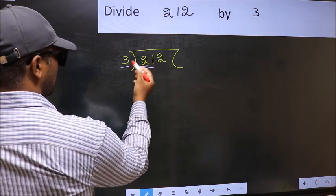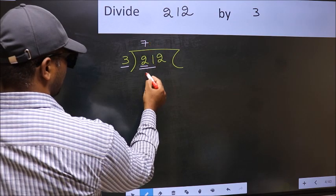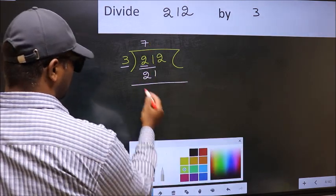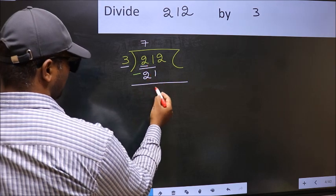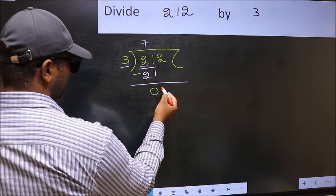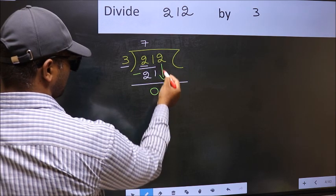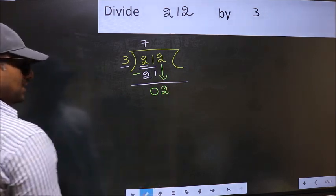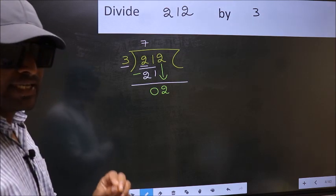When do we get 21 in the 3 table? 3 times 7 is 21. Now subtract 21 minus 21, which is 0. After this, bring down the next number, so 2 comes down. After this step, the mistake happens.